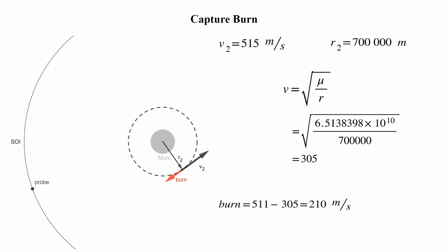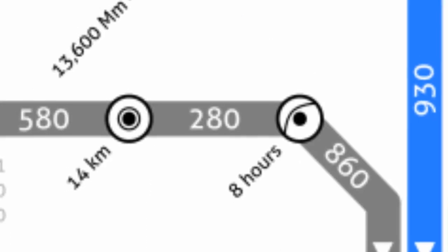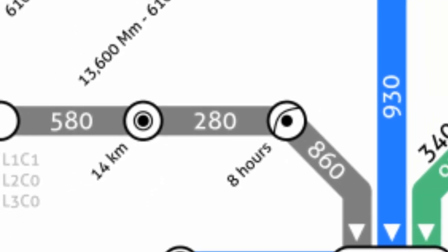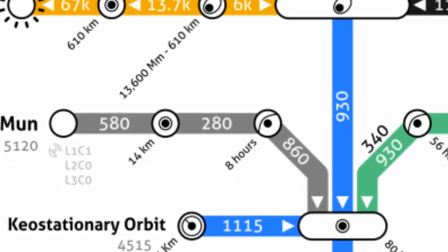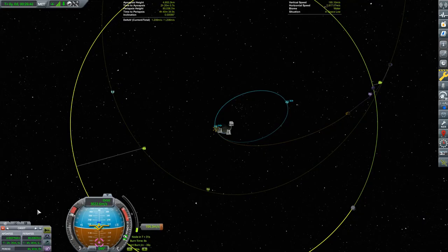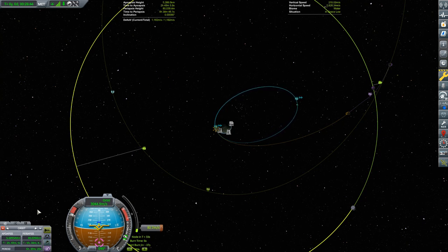It's worth noting at this point that this is significantly less than the capture burn for a low moon orbit given to us by this common delta-v map. You might assume that captures keep getting cheaper as altitude increases, which is almost right. But actually, the cheapest capture around the moon happens at a little over 1400 kilometers, and then the cost starts creeping back up again.